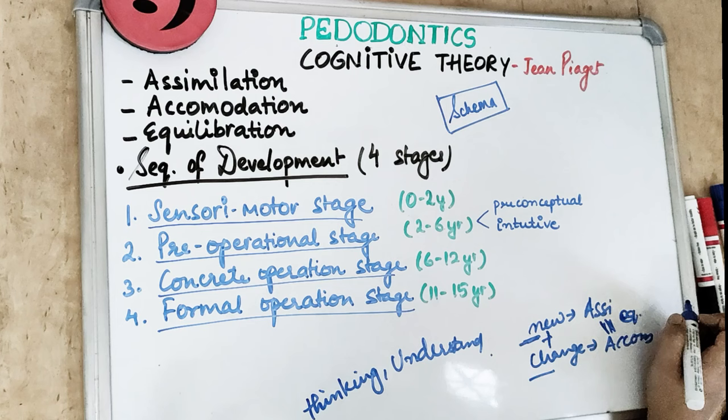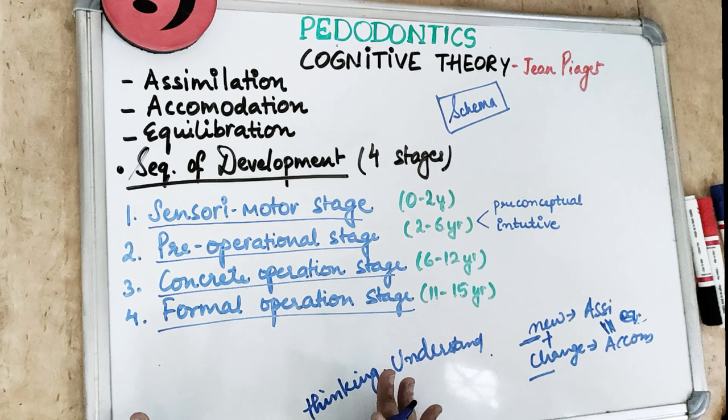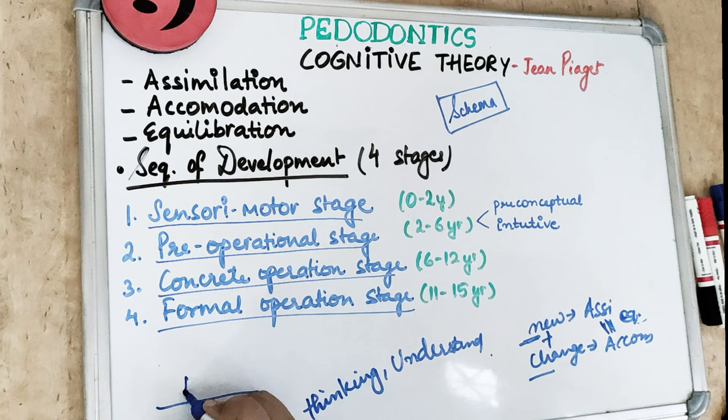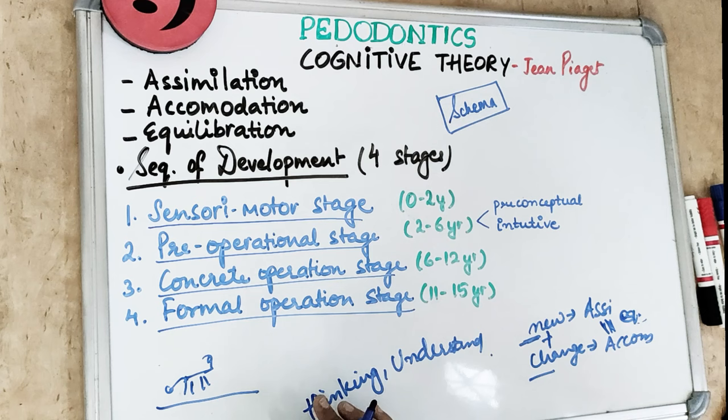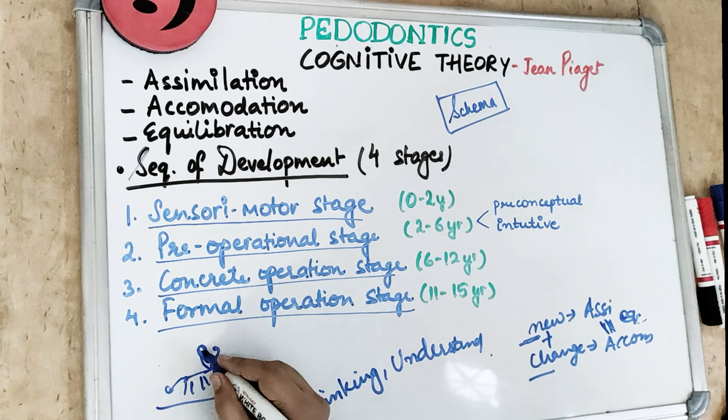Here is a story to help understand how the adaptation process works. There was a kid sitting in the balcony who saw a cow. He asked his mother, 'Mama, what is this with four legs, a head, and a tail?' The mother told the child it's a cow. After a few days, he saw a bull and told his mother, 'Mama, see — a cow is crossing!' The mother quickly responded, 'Can you see the big horns?'